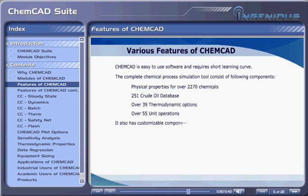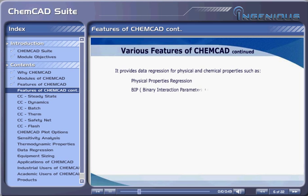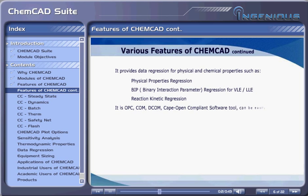It also has customizable components such as chemical components, thermodynamic properties, unit operations, and graphic symbols. It provides data regression for physical and chemical properties such as physical properties regression, BIP (binary interaction parameter) regression for VLE and LLE, and reaction kinetic regression. It is OPC, COM, and D-COM CAPE open-compliant software that can be easily interfaced with plant DCS for online optimization and performance monitoring.